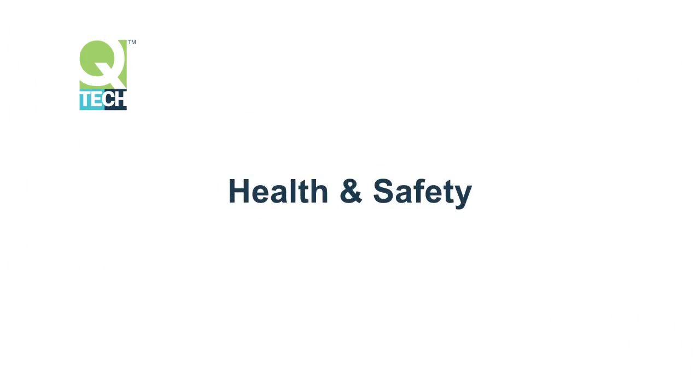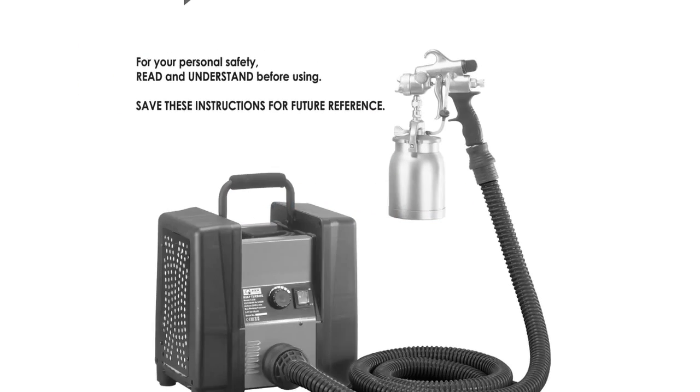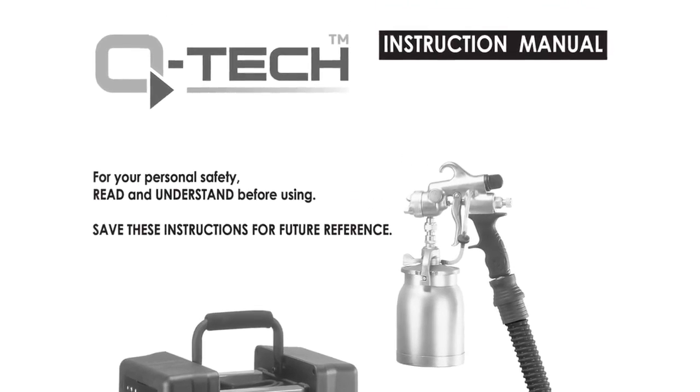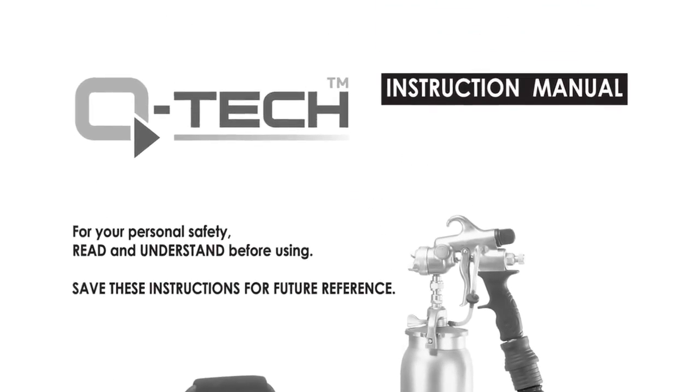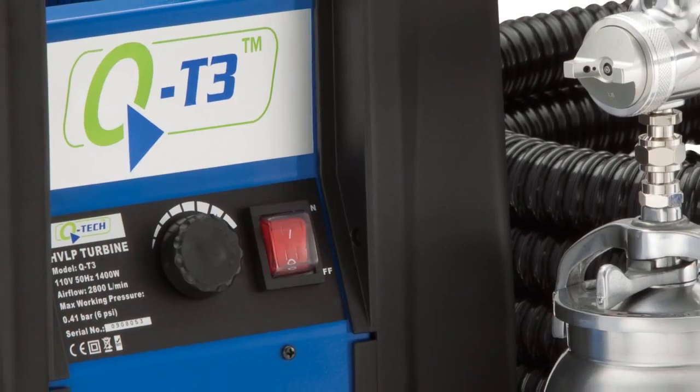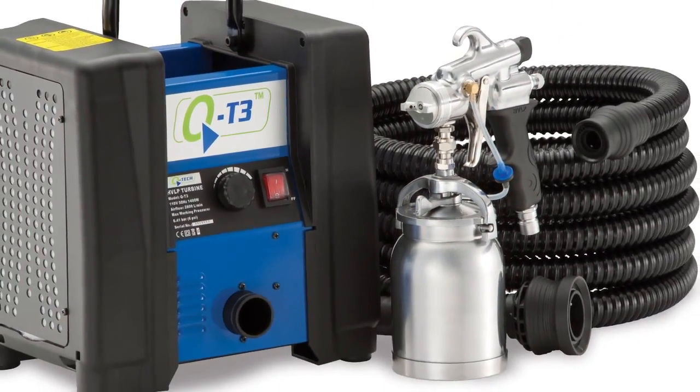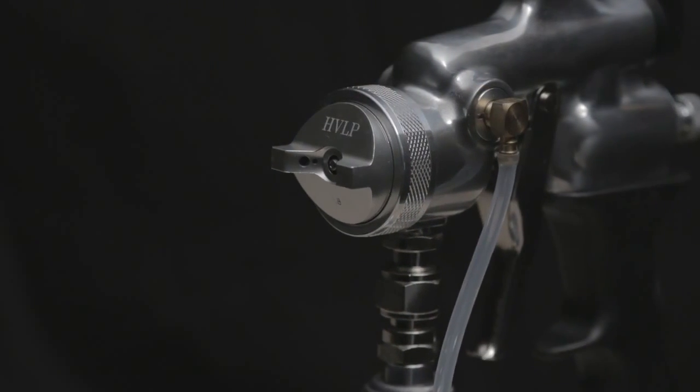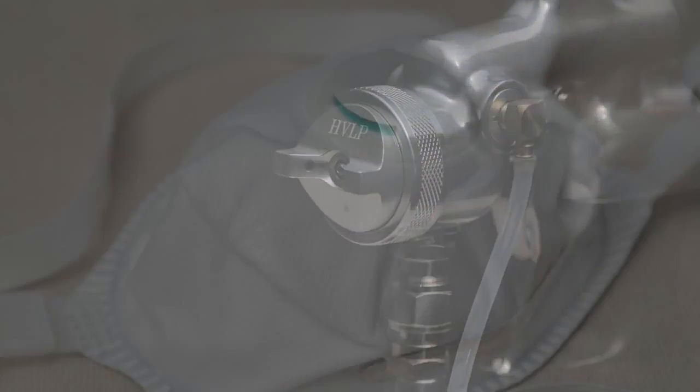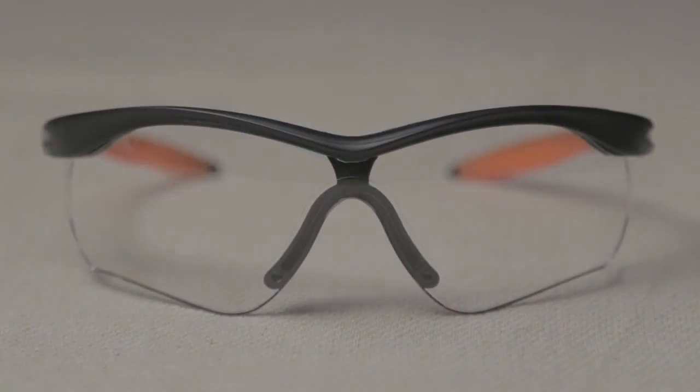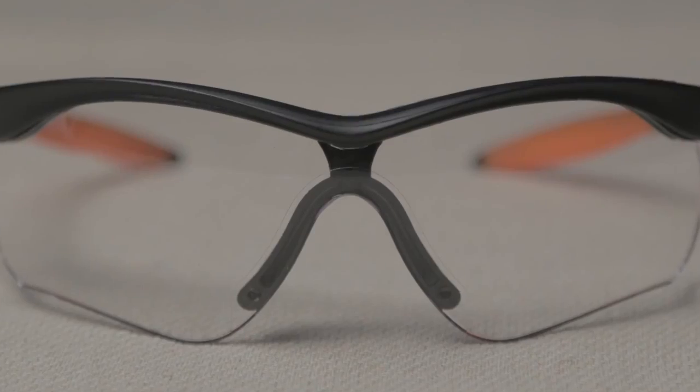Before operating the QT3 turbine sprayer, it is recommended that you thoroughly read through the instruction manual, taking time to carefully go through the general safety rules. Keep in mind that this is an electric power tool and should be operated with caution. Never point the spray gun at anyone or any part of the body. Always wear a spray mask respirator. Gloves and protective eyewear are also recommended while spraying.